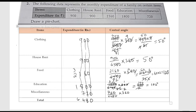Next is miscellaneous: 720 divided by 6480 multiplied by 360. We cancel the zeros, and we can cancel 72 and 72 directly to get 40 degrees. If we add all the angles: 50 plus 50 is 100, plus 120 is 220, plus 100 is 320, plus 40 is 360 degrees. So this is the total angle — verified.